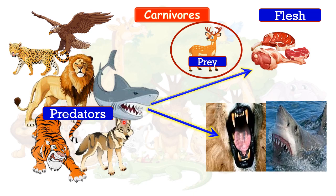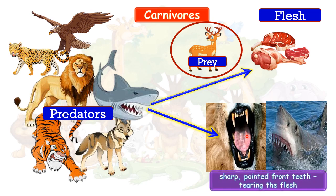Now children let's see their teeth structure. You can see sharp teeth here. They have sharp pointed front teeth to cut or tear flesh. You can see it is sharp and pointed — these teeth are for tearing the flesh of animals.